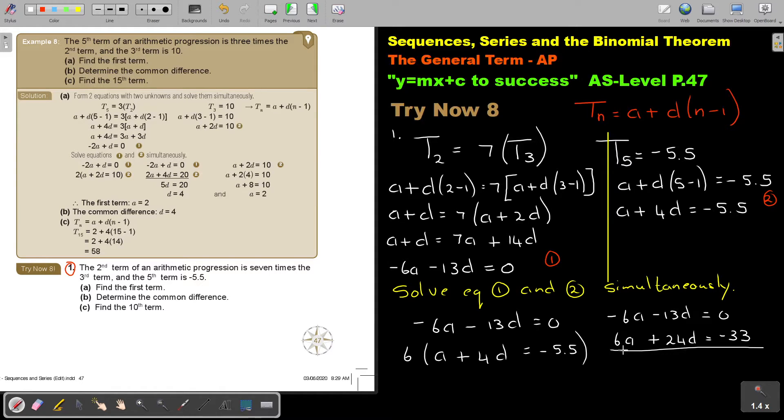And if I simplify this, cancel. So this is going to be 11D and negative 33. And if I divide by 11, 11, so therefore, D is equal to negative 3.